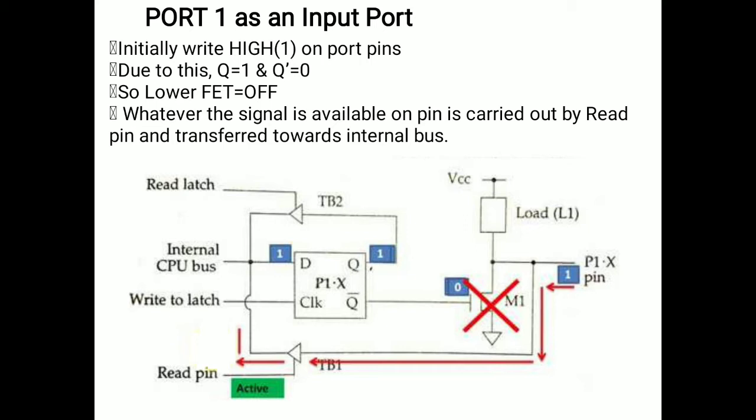The connection diagram or internal structure of Port 1 is as shown on screen. A latch (flip-flop) is there, along with one FET at the lower end and an internal pull-up resistor at the upper side. L1 is the pull-up resistor connected internally with the port pins of Port 1. In contrast, Port 0 has two FETs — upper FET and lower FET, M1 and M2 — but no internal pull-up resistor.